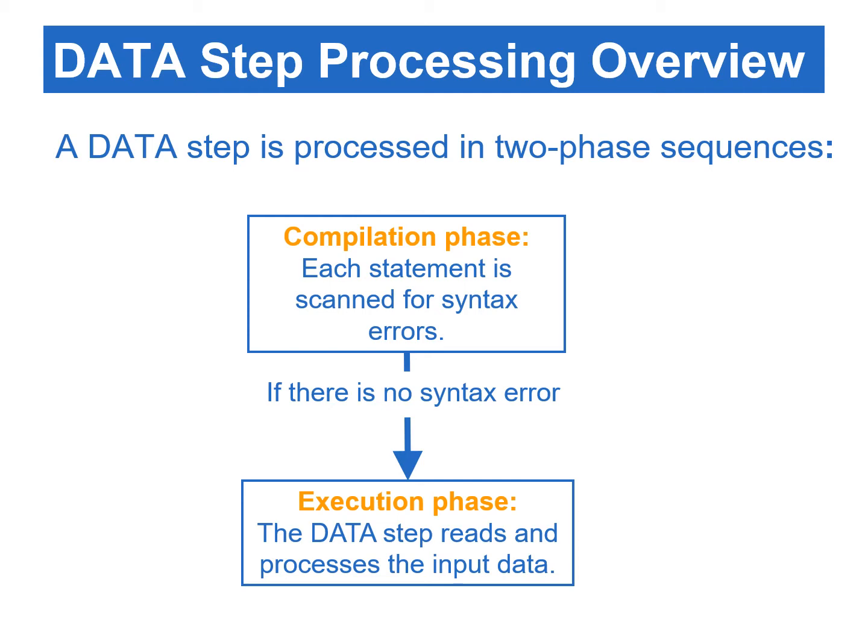Each loop is called an iteration. We can refer to this type of loop as the implicit loop, which is different from the explicit loop, by using iterative DO, DO-WHILE, or DO-UNTIL statements.